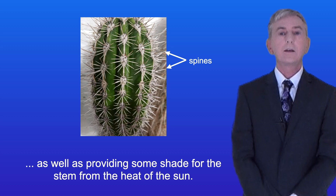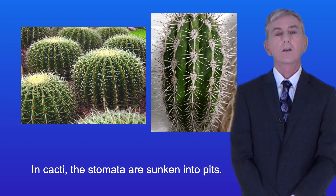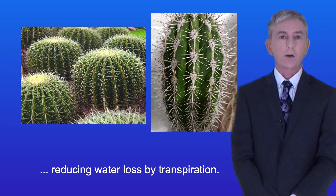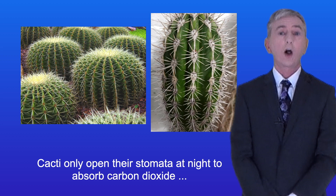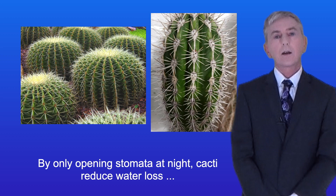Cacti also have a thick waxy cuticle to reduce evaporation of water. In cacti, the stomata are sunken into pits, which traps a layer of moist air around the stomata, reducing water loss by transpiration. Cacti only open their stomata at night to absorb carbon dioxide when conditions are relatively cool. The carbon dioxide is then used during the day for photosynthesis. By only opening stomata at night, cacti reduce water loss during the heat of the daytime.